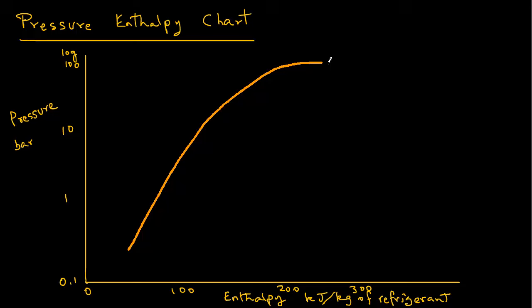Next we draw a bell shaped curve skewed to the right. The left side curve we will label as saturated liquid curve. Any point on that curve represents saturated liquid state. On the left hand side the region is for subcooled liquid.